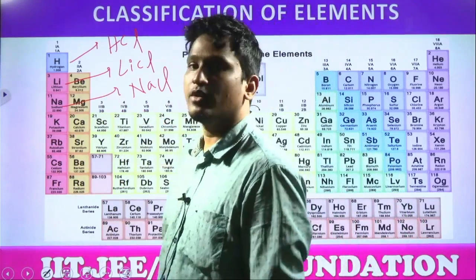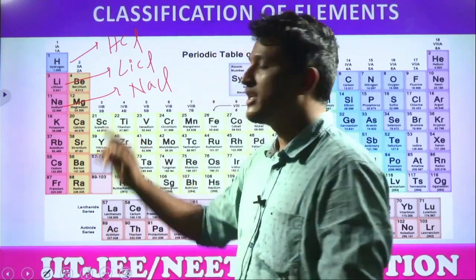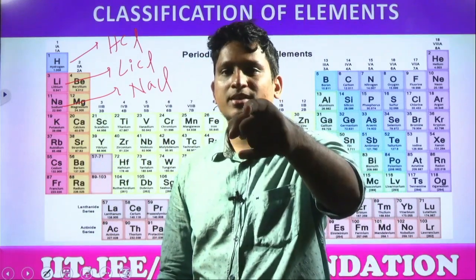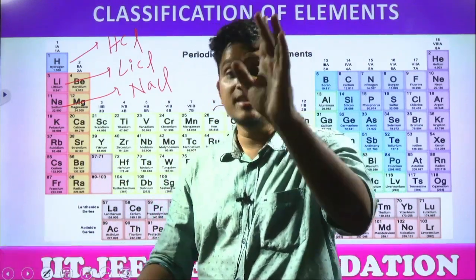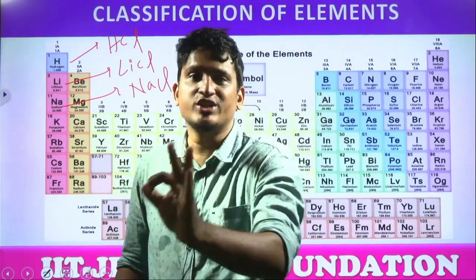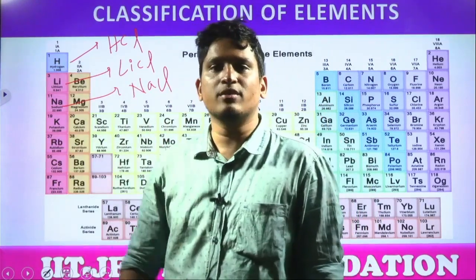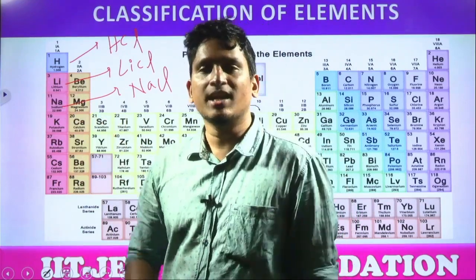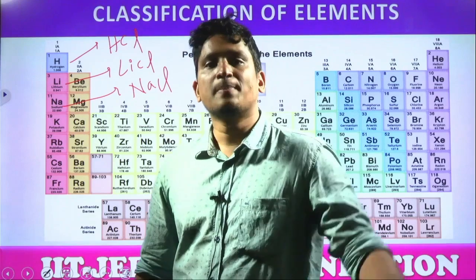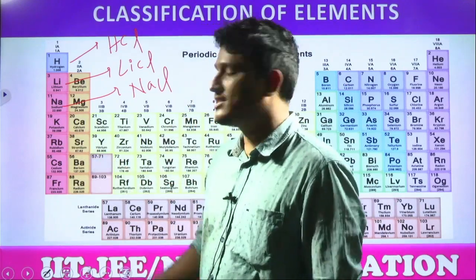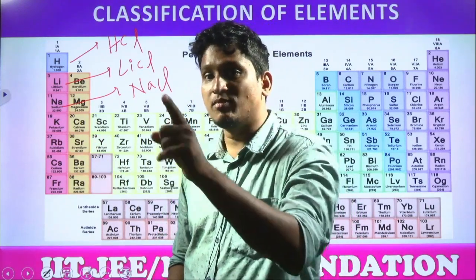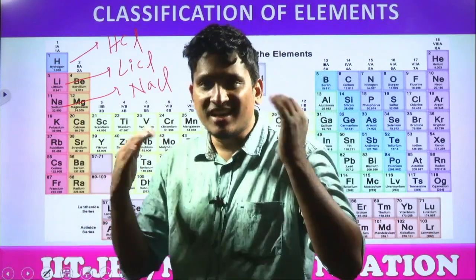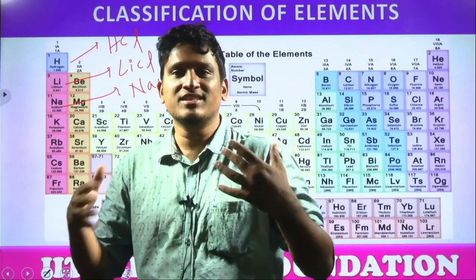If beryllium combines with oxygen, the formula is BeO; if magnesium combines it is MgO; if calcium combines it is CaO — they combine in the same ratio. If hydrogen combines with oxygen the formula is H₂O; lithium gives Li₂O; sodium gives Na₂O. A new element like cesium — can you predict the formula of cesium oxide? It would be Cs₂O.